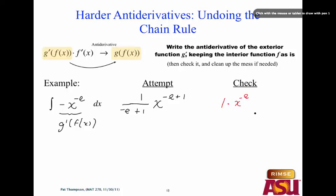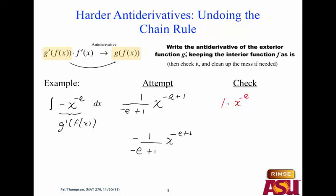So how do we do on our first attempt? I left off the negative sign. If you thought to put a negative sign there, your check would have been negative x to the minus e, and you'd be done. I didn't put the negative sign, so I have to adjust. Second attempt: negative 1 over (negative e plus 1) times x to the minus e plus 1. That's the same as 1 over (e minus 1) times x to the negative e plus 1. And we add plus c.